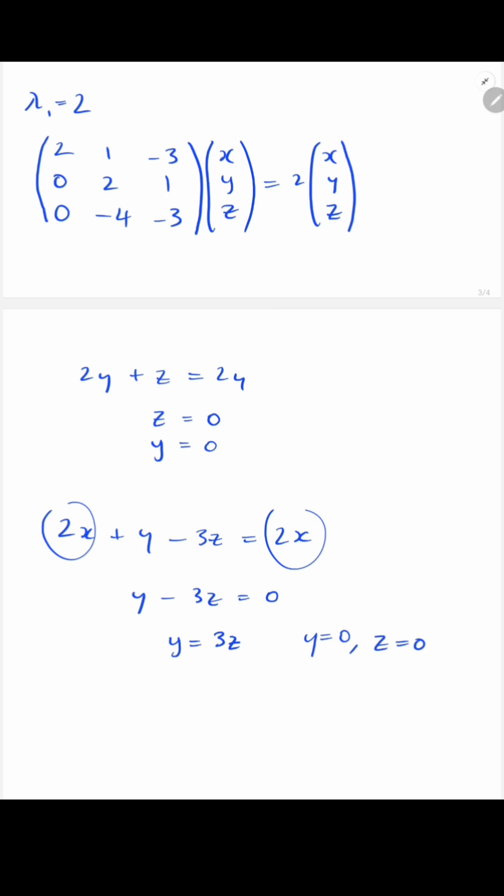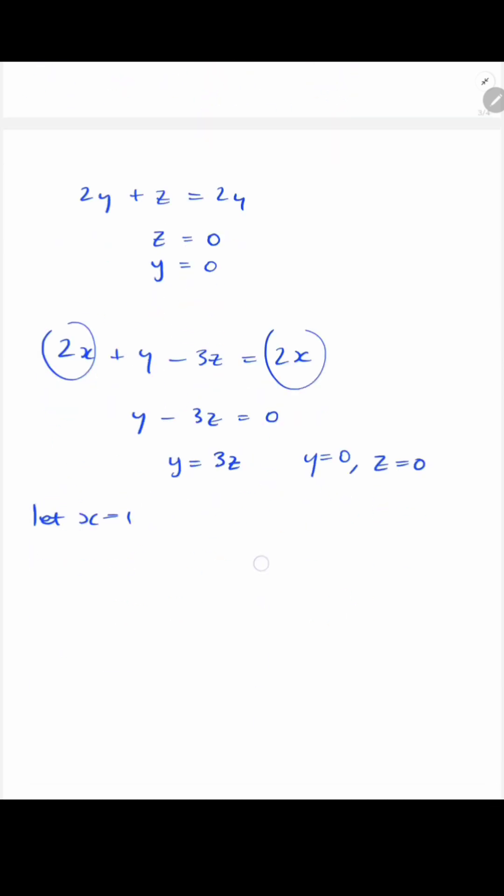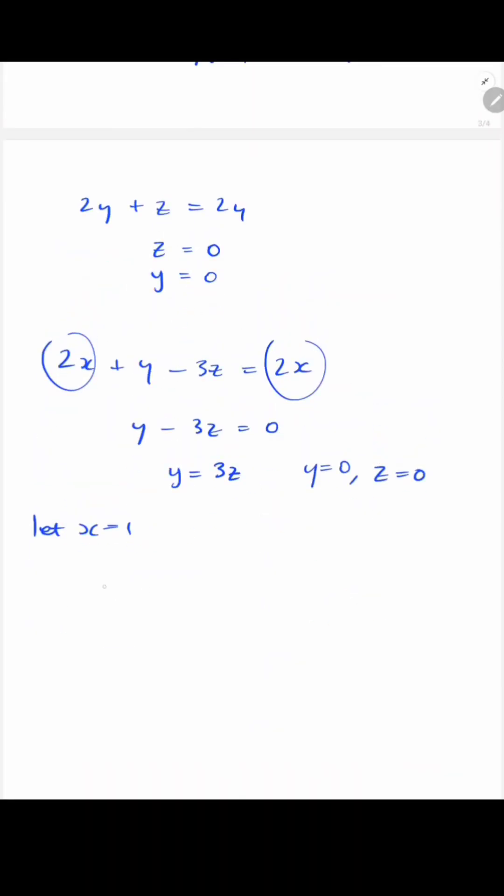So the variable x appears in no equation. So you can take any non-zero value. Remember that rule. 1 is the simplest value that could be used. So let's just take x equal to 1. And in this case, we have an eigenvalue 1 of 2, which is going to correspond to an eigenvector 1 of x, we chose it to be 1, and y and z were both 0.